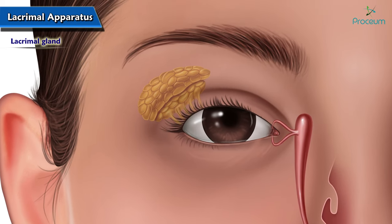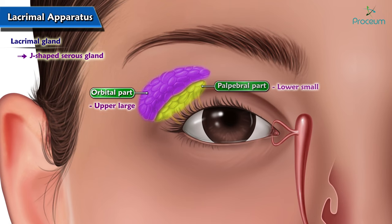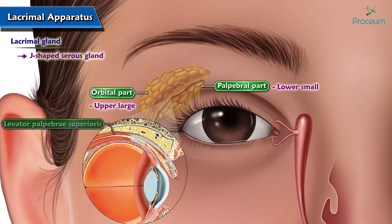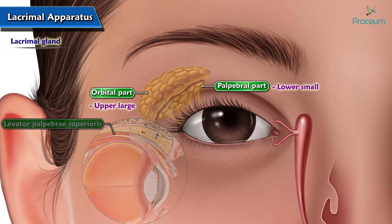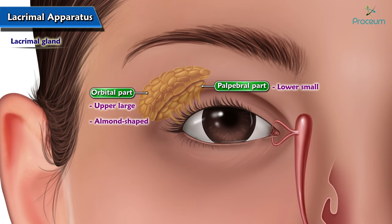The lacrimal gland is a J-shaped serous gland. It consists of the upper large orbital part and lower small palpebral part. The two parts are continuous with each other around the lateral margin of the levator palpebrae superioris. The orbital part is almond-shaped and situated in the lacrimal fossa.